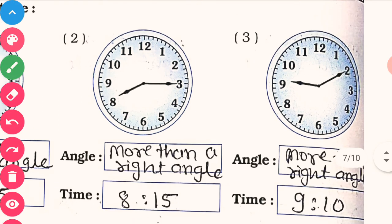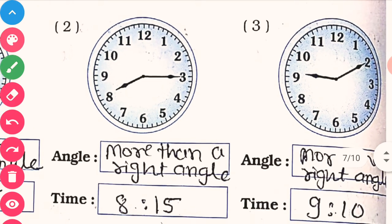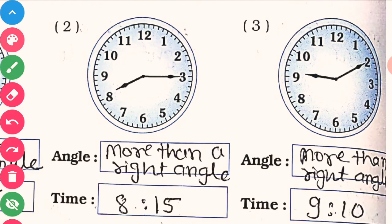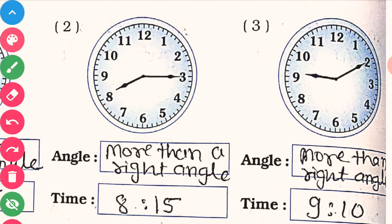Now let us see figure in clock number 2. In clock number 2, you can see that the hour hand is at the number 8, and the minute hand shows 3. So write here 8 for the hour.